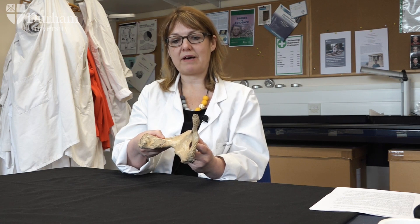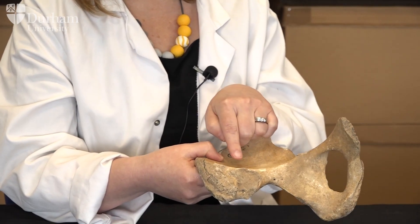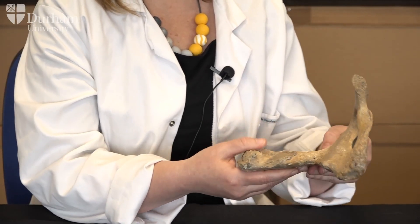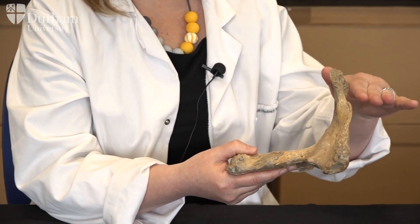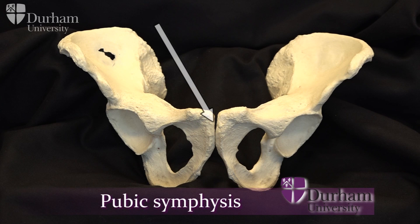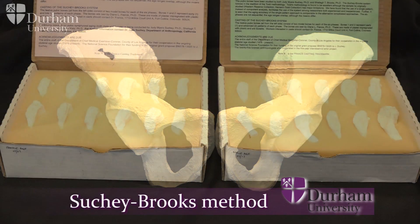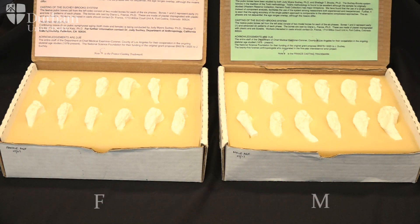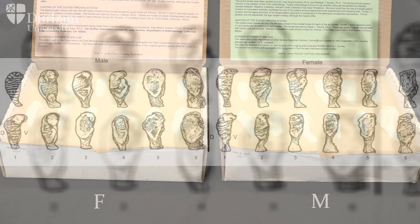For adult age estimation, I'm going to talk about two features of the pelvis: the pubic symphysis and the auricular surface. The auricular surface tends to preserve more frequently than the pubic symphysis because, if we imagine a body lying on its back in the ground, the pubic symphysis is quite exposed and easily damaged by spades or excavation equipment. It's also a very fragile part of the body. The method used most frequently to estimate age from the pubic symphysis is the Suchey-Brooks method, which is popular partly because they produced a set of casts for male and female pubic symphyses.